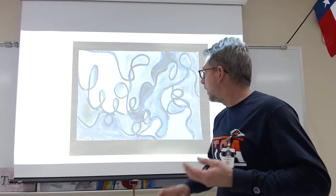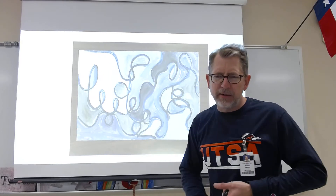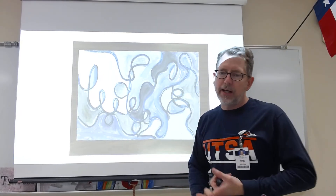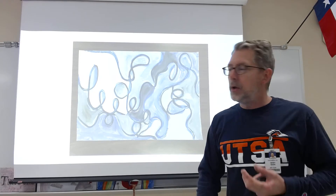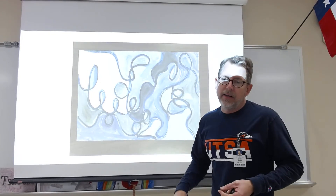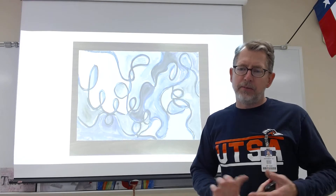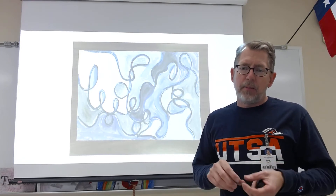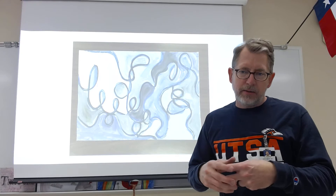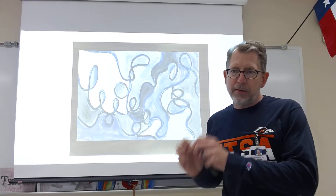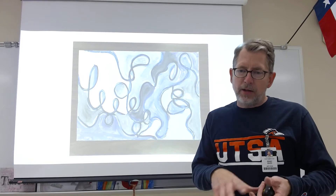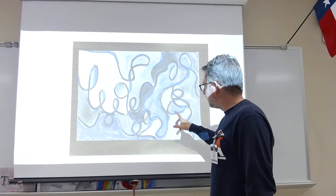After drawing lines, I chose one color — I chose blue. It's kind of hard to see on the video screen, but my color was blue. So I have blue, white, and black. I'm going to add white to my blue to make a light blue, and I'm going to add black paint to it to make a dark blue.